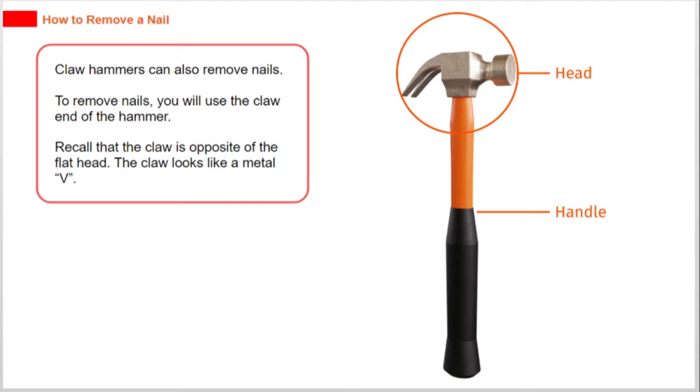Claw hammers can also remove nails. To remove nails, you will use the claw end of the hammer. Recall that the claw is opposite of the flat head. The claw looks like a metal V.